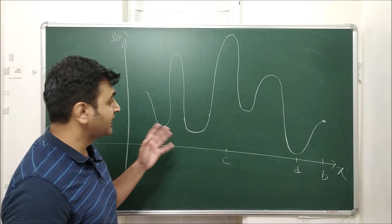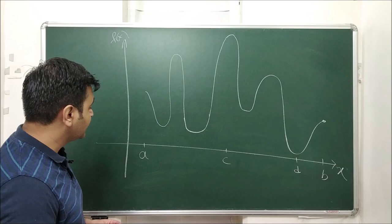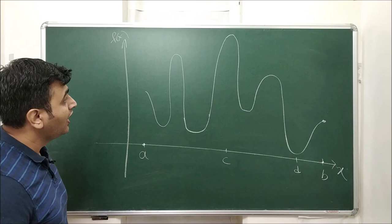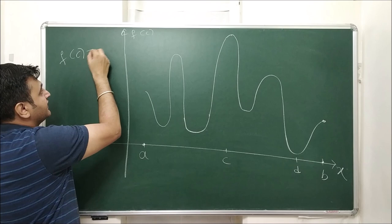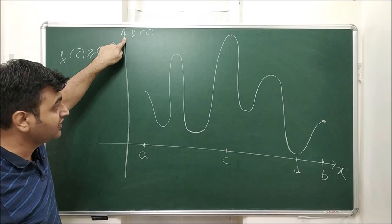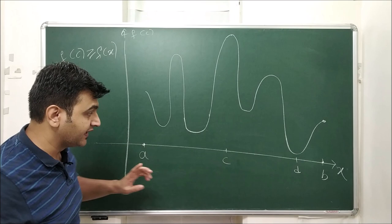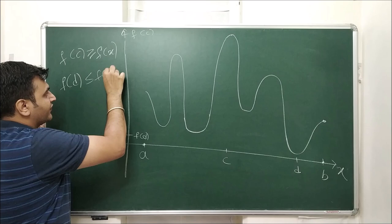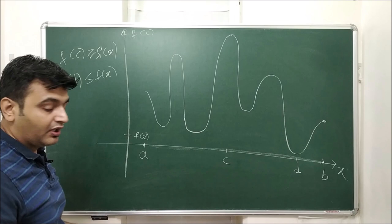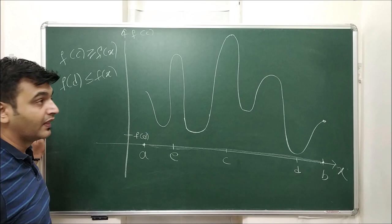Let us start by looking at the graph. The function has a domain on the closed interval a to b. At point C you can see that this is the topmost point, so f(C) ≥ f(x) for all x in the domain — this is the global maximum at C. If I call this lower point f(D), then f(D) ≤ f(x) for all x in the domain, making D the global minimum.